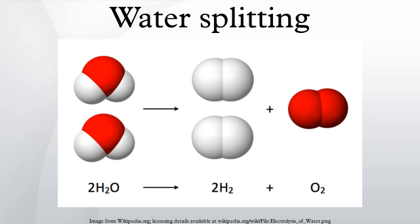The initial reaction consumes sodium hydroxide and produces both hydrogen gas and an aluminate by-product. Upon reaching its saturation limit, the aluminate compound decomposes into sodium hydroxide and a crystalline precipitate of aluminium hydroxide.